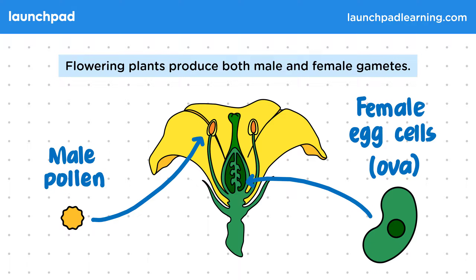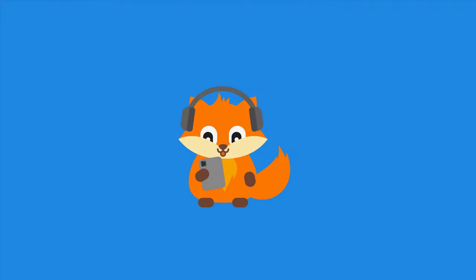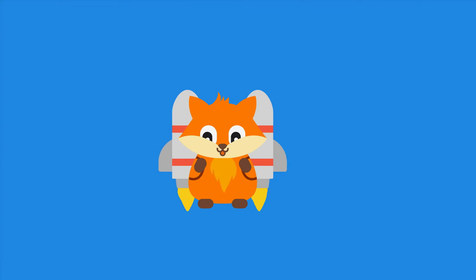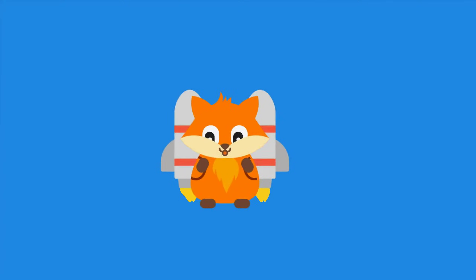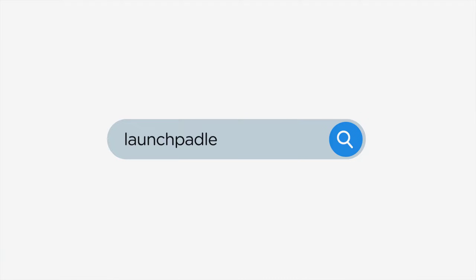For the exam, you should be able to name the plant gametes, but you don't need to be able to describe the structure of the flower.